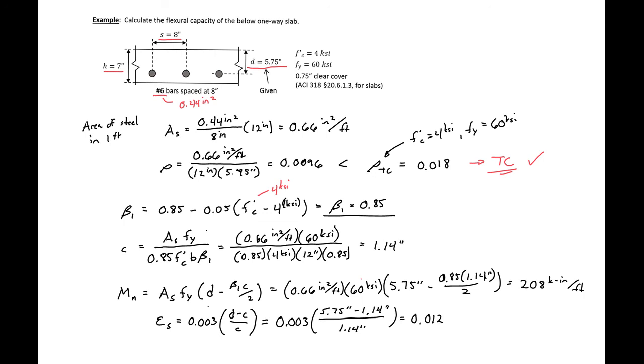So we can see we're tension controlled. So then our φ MN is just going to be 0.9 times our 208, which will be 187.2 kip inches per foot. So this is our factored nominal capacity and our unfactored nominal capacity for the given slab that we started with.